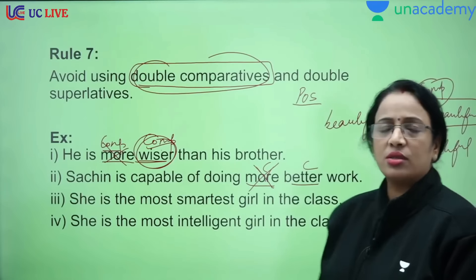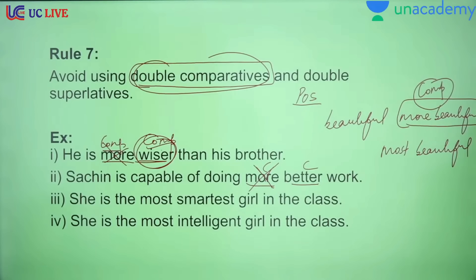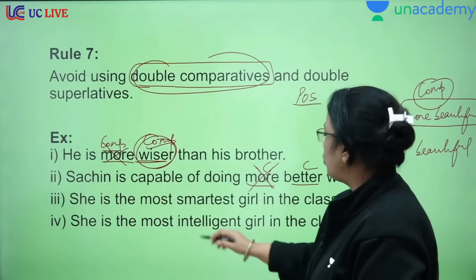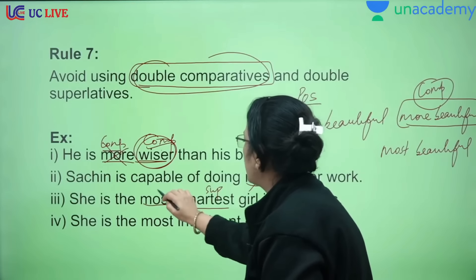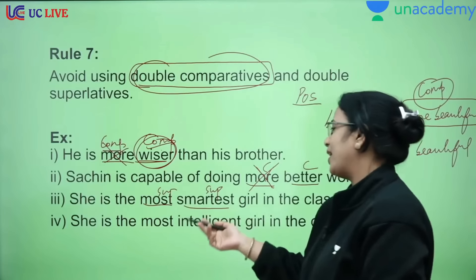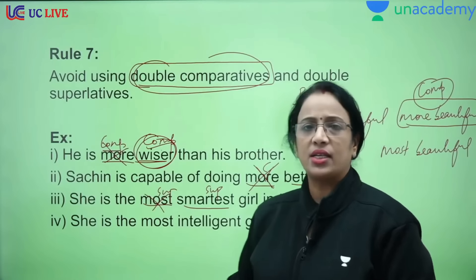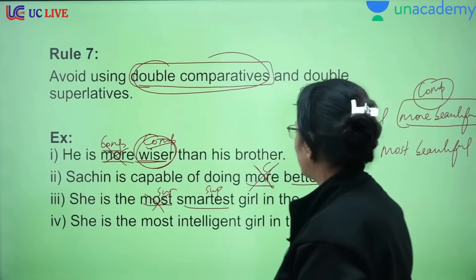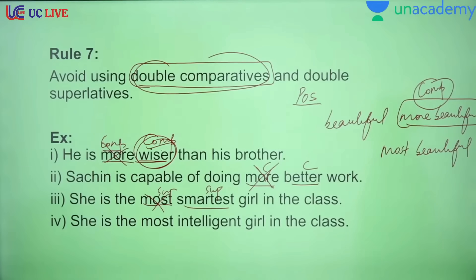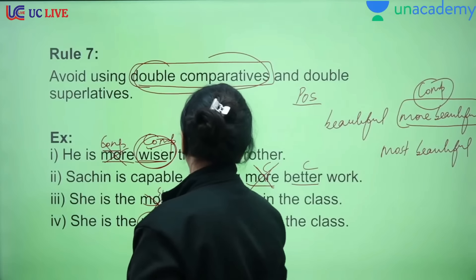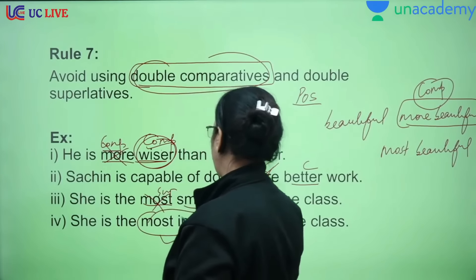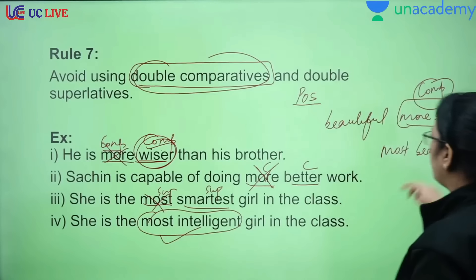'She is the most smartest girl in the class.' Where is the error? 'Smartest' is already superlative, and 'most' is also superlative — two superlatives in one sentence. The correct form is: 'She is the smartest girl in the class.' Next: 'She is the most intelligent.' Is there an error? No error — there is only one superlative here, which is correct.